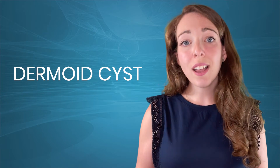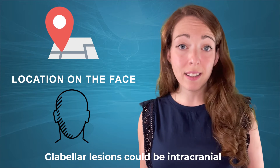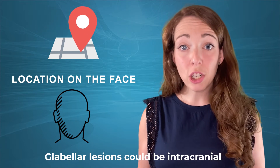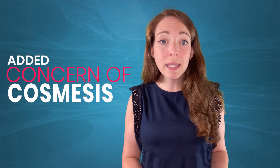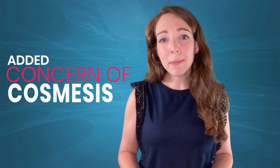The discussion on which of these to image is dependent on the location on the face. Those in the glabellar region need imaging, but in this location it's unnecessary, and moving right to excision is appropriate. You're going to take him to the OR and excise that. Excisions on the face are sensitive due to the added concern of cosmesis, but the proximity of the eyebrow can really help in covering the scar into the eyebrow line.